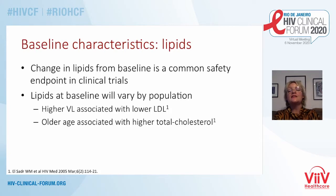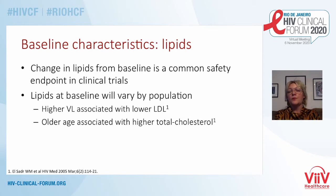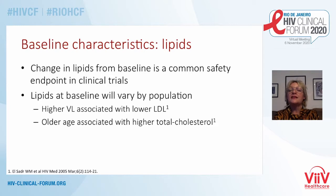Let's take the example of lipids and baseline characteristics. Lipids and the change in lipids from baseline are a common safety endpoint in clinical trials. However, lipids at baseline will vary in different populations. Examples are the fact that a higher viral load is associated with a lower LDL, and older age is associated with a higher total cholesterol.